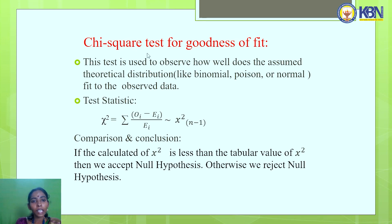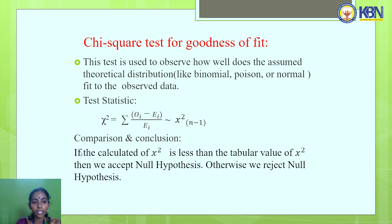Chi-square test for goodness of fit: This is used to observe how well an assumed theoretical distribution — such as binomial, Poisson, or normal — fits the observed data. The test statistic is χ² = Σ(Oᵢ − Eᵢ)²/Eᵢ, which follows a chi-square distribution with n−1 degrees of freedom. We reject the null hypothesis if the calculated chi-square is greater than the tabular value; otherwise accept the null hypothesis.